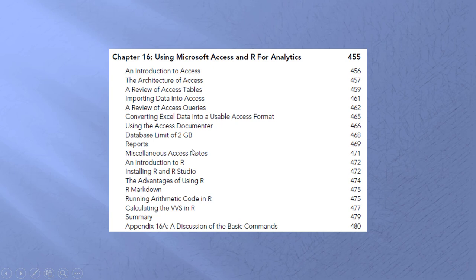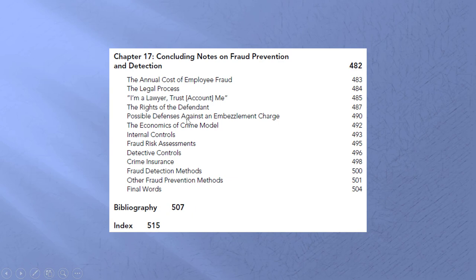R is new — we have a whole half-chapter all about R, and a half-chapter all about Access. The reason these two chapters are here is because Excel has a limit on the number of transactions it will process. Access has a higher limit, and R has virtually no limit — it's almost like a road without speed limits.